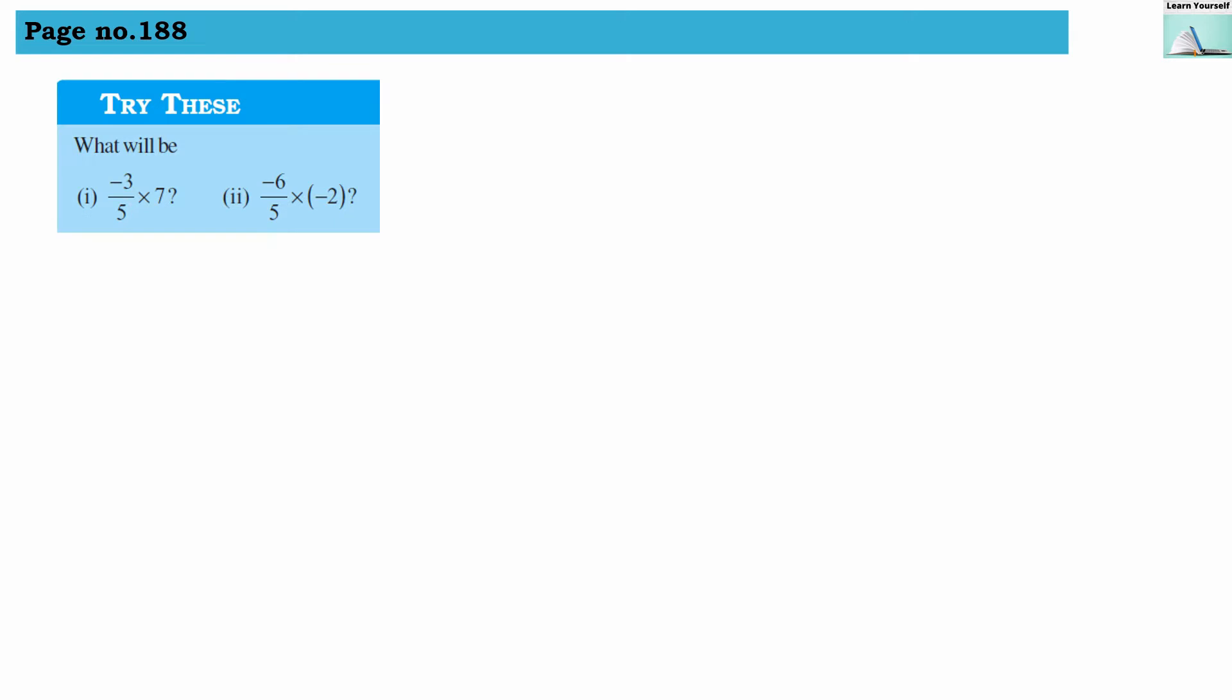Try this sum from page number 188. What will be -3/5 × 7? Here we have to find out the product from these two numerals. Product means we have to find the answer from this multiplication. -3/5 is in multiplication with 7. When the whole number 7 is there, we can write 1